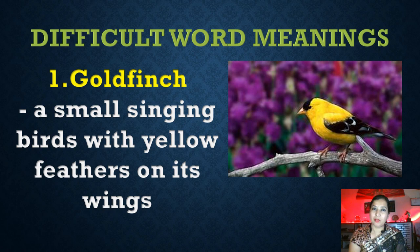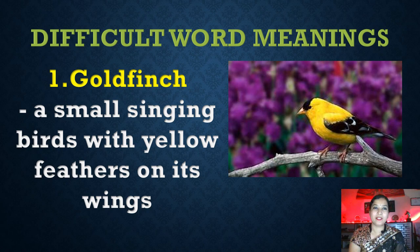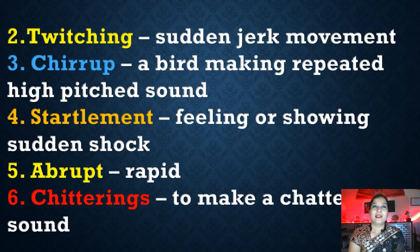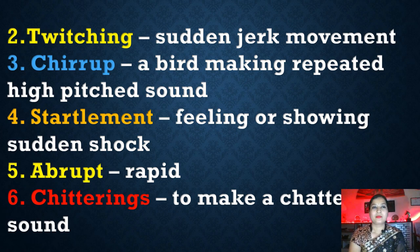Let's see the difficult word meanings used in the stanza. You may not be aware of the word 'goldfinch' — as you can see in the picture, it is also yellow in color. It's a beautiful small singing bird with yellow feathers on its wings. 'Twitching' means sudden jerky movement. 'Chirrup' is the sound made by a bird — a repeated high-pitched sound.